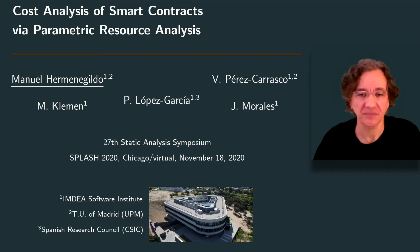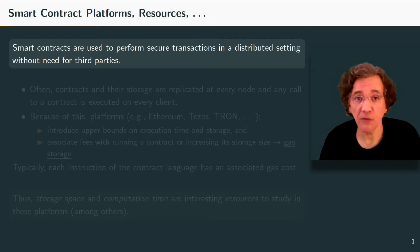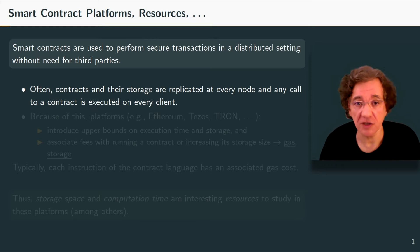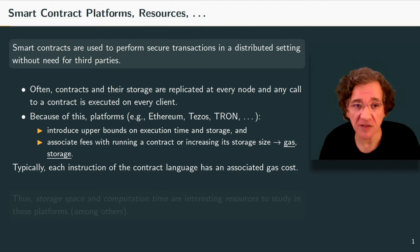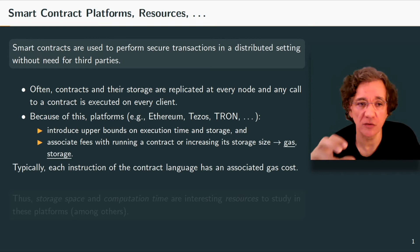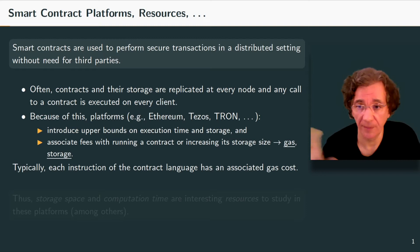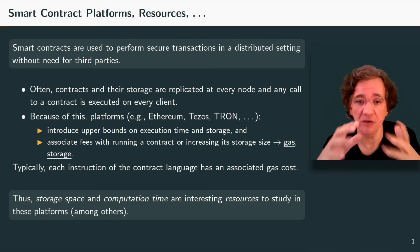Smart contracts are used to perform secure transactions in a distributed setting without the need for third parties. Often, contracts and their storage are replicated in every node, and any call to a contract is executed on every client. Because of this, platforms like Ethereum, Tezos, etc., introduce upper bounds on execution time and storage and associate fees with running a contract or increasing its storage size. This is basically gas and storage costs. Each instruction of the contract language has an associated cost. Therefore, storage space and computation time are interesting resources to study in these platforms.